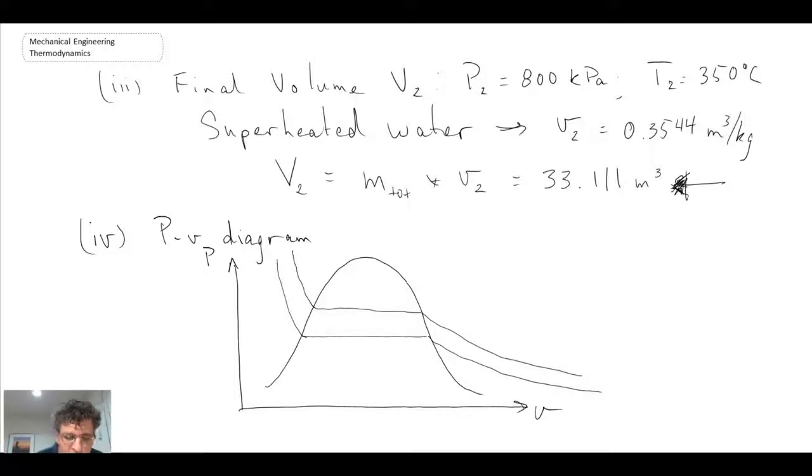And this is what the lines would look like at constant temperature on a PV diagram. So what I've drawn here are two different isotherms. One is at 170.43 degrees C, and the other one is an isotherm at 350 degrees C. And remember we start off at saturated liquid at 800 kPa. The pressure does not change, but we're somewhere in here, state one. And then with our process, we move to the right until we hit the 350 degrees C line or isotherm.